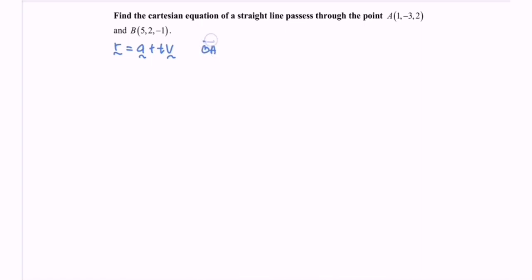So we have OA equals 1, negative 3 and 2. And the point B, where we have 5, 2, negative 1.